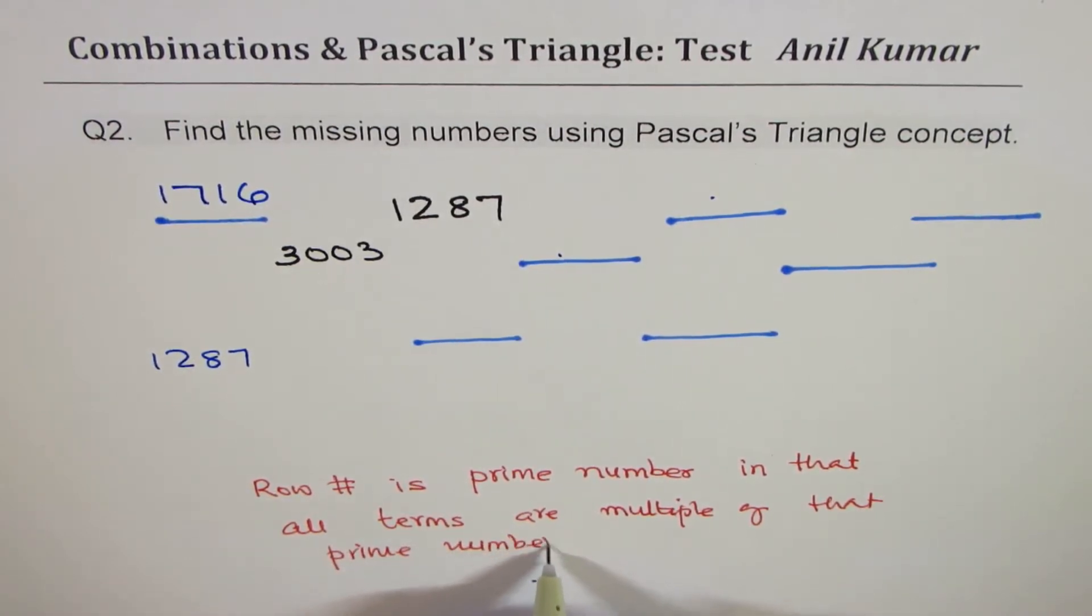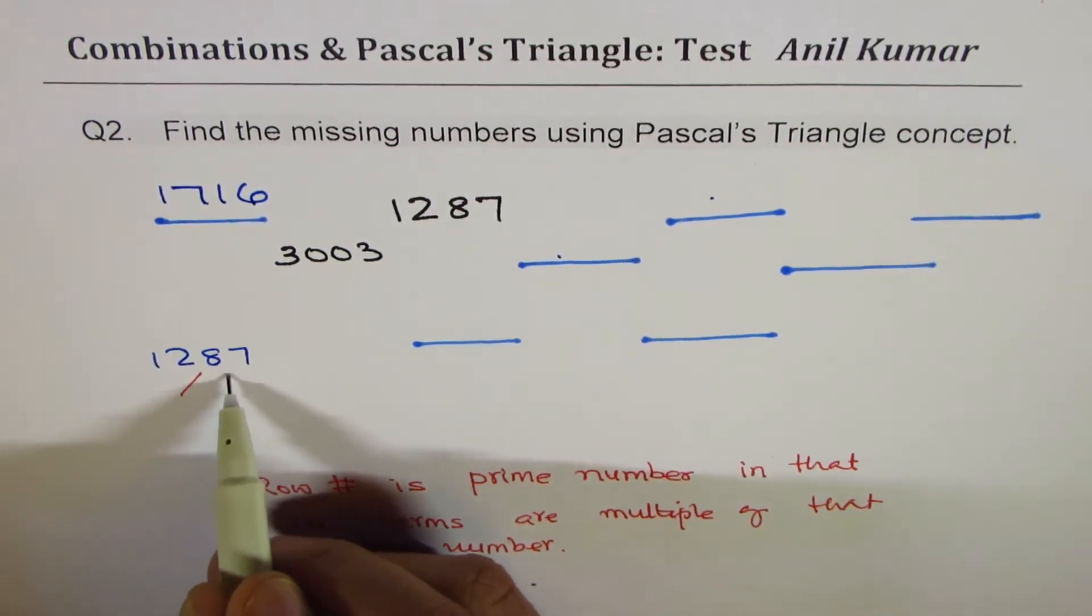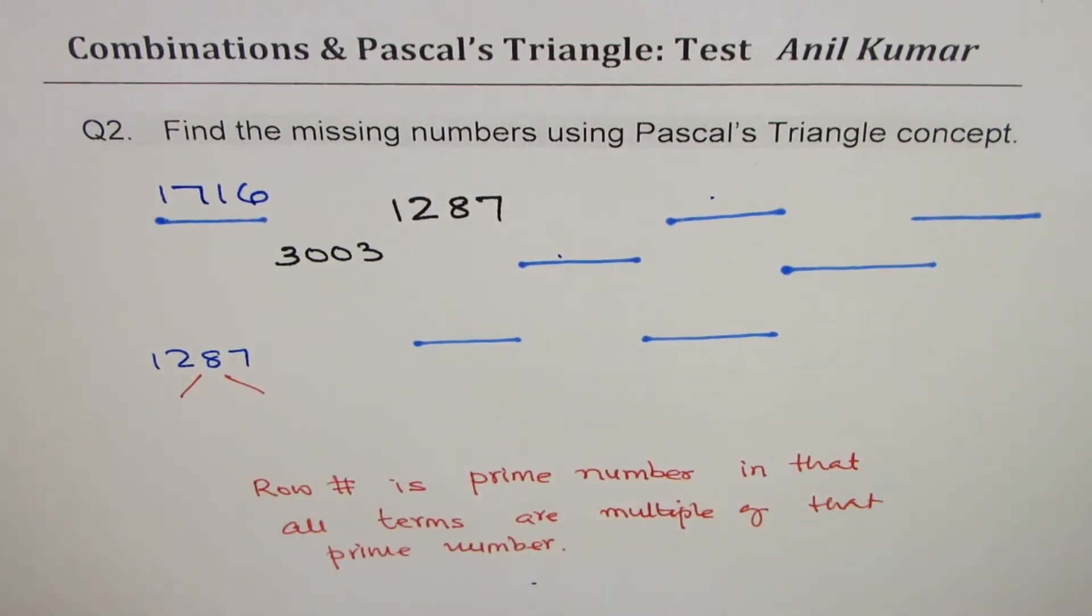Now this is a very important property which can help you solve such questions. So that is why I have taken this up. So now let's try to find factors of 1287 and we are actually looking for a prime number.